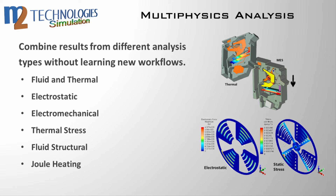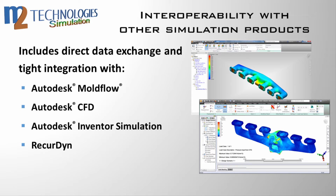Combine results from different analysis types to help predict a product's real-world performance. Users can simulate the mechanical stresses imposed on a structure by the effects of thermal loading, fluid pressures, or current flow. Direct data exchange with other simulation products, like mold flow and CFD, allows for inter-product multi-physics simulation without the need to recreate inputs manually. Thermal and fluid pressure loads are easily transferred from CFD, and residual stress and fiber orientation results imported from mold flow save setup time and allow for more accurate product strength prediction.